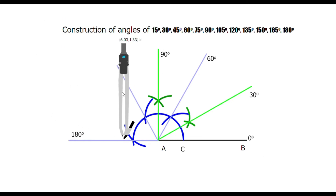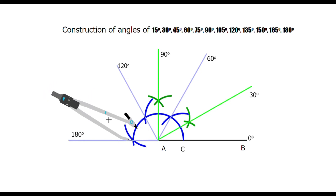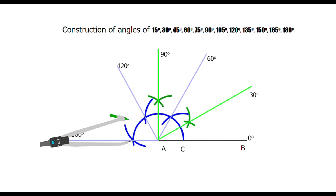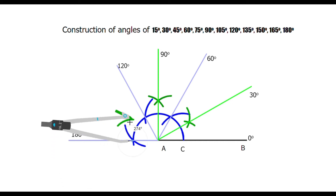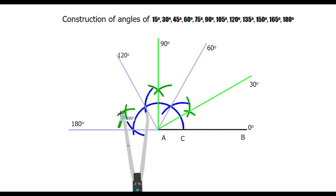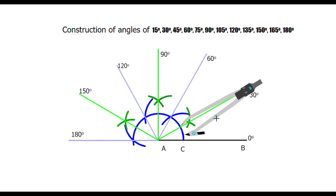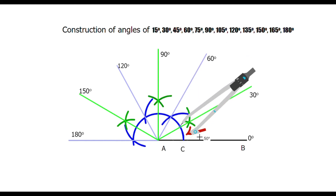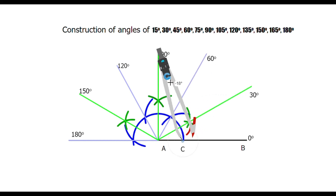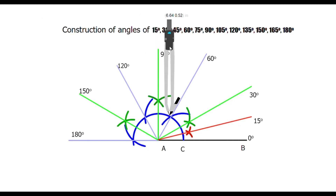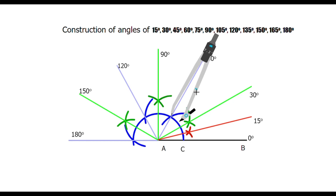If we bisect 120 and 180 we get a 150 degree angle. Now we will bisect 0 and 30 degree to get a 15 degree angle. Now we will bisect 30 and 60 degree angle to get a 45 degree angle.